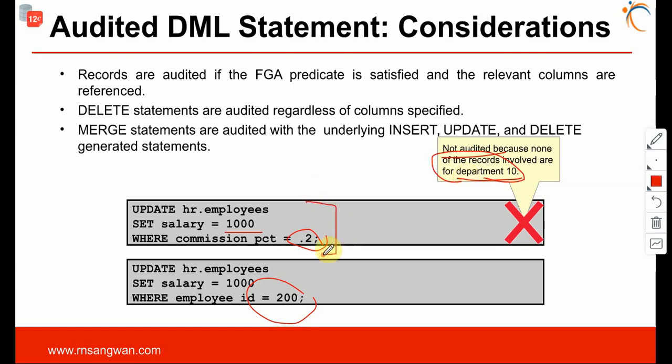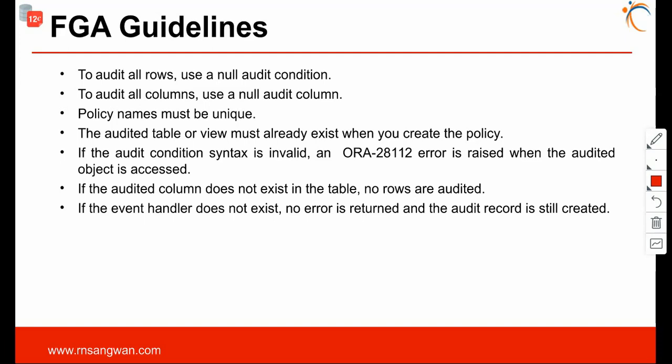In that statement, department_id = 10 is nowhere mentioned. If the row being affected happens to be from department 10, then it will be audited. Guidelines: to audit all rows use NULL audit_condition; to audit all columns use NULL audit_column. Policy name must be unique. The audited table or view must already exist when you create the policy. If the audit condition syntax is invalid, ORA-28112 error is raised when audit objects are accessed. If the audit column does not exist in the table, no rows are audited. If the event handler does not exist, no error is returned but the audit record is still created.